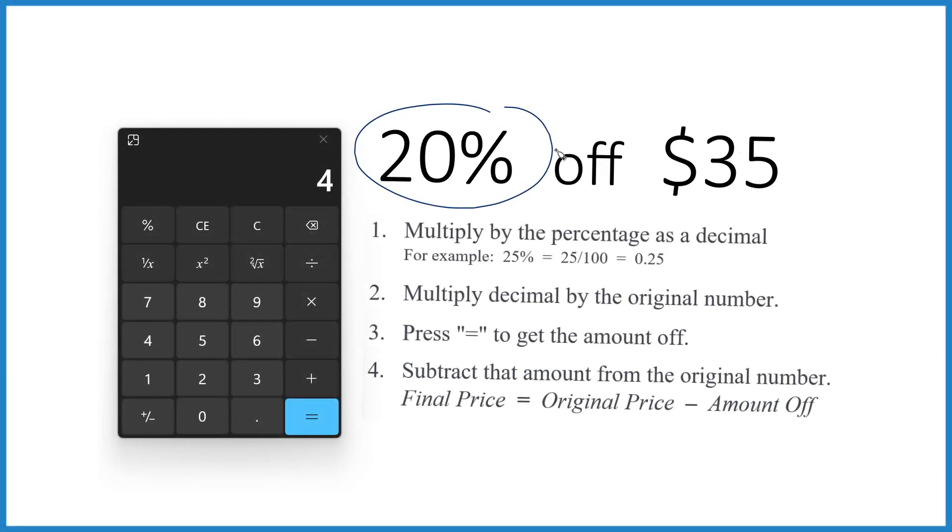So let's say you need to take 20% off of $35. How do you figure out how much you're going to get off of the $35 and then how much your final price will be? That's what we're going to do in this video.